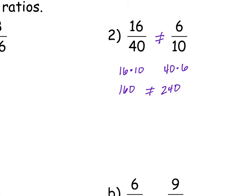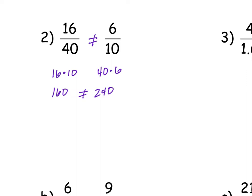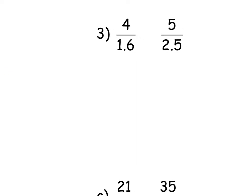Let's do two more. The next one has decimals in it. Definitely going to use multiplication with decimals, right? Because simplifying with decimals is even harder. So I'm going to do 4 times 2.5 and I'm going to do 5 times 1.6. 4 times 2.5 is 10, and 1.6 times 5 is 8. So those are not equal.